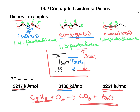Conjugated dienes are the most stable — 1,3-pentadiene has the smallest heat of combustion because it started at the lowest energy. A conjugated diene is more stable than an isolated diene, and an isolated diene is more stable than a cumulated diene. Cumulated dienes are high energy and very unstable; they require different methods to make and undergo different reactions, so we won't study them further. Isolated dienes behave just like regular alkenes, but conjugated dienes are interesting — we'll look at the reason for their stability and what that means for preparation and reactions.